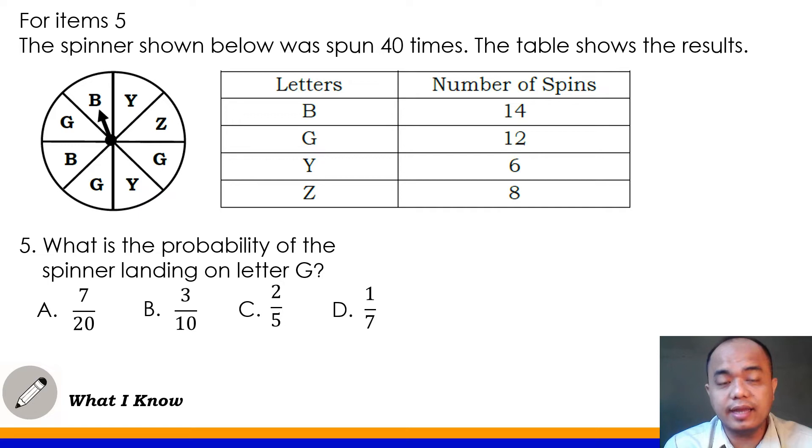We will use the same data for number 5. The question is, what is the probability of the spinner landing on letter G? So letter G naman yung ating kukunin na probability. Based sa ibinigay na data wherein this is the result after spinning the spinner 40 times. So yung letter G natin is 12. So number of favorable outcomes here is 12 and the number of possible outcomes naman ay 40.